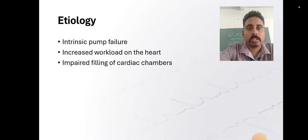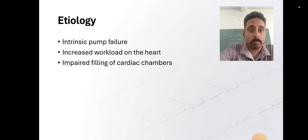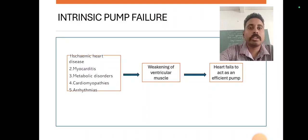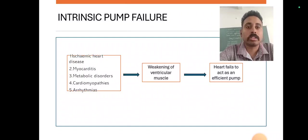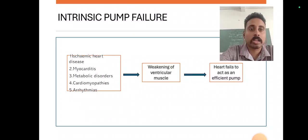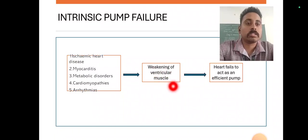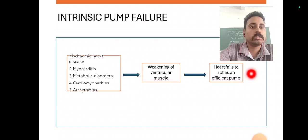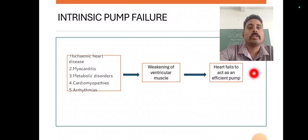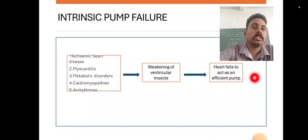Next is the etiology. The first one is intrinsic pump failure, the second is increased workload on the heart, and the third is impaired filling of the cardiac chamber. Intrinsic pump failure can occur through different diseases: ischemic heart disease, myocarditis, metabolic disorders, cardiomyopathy, and arrhythmias. These diseases cause weakening of the ventricular muscle, and when the heart fails to act as an efficient pump, it leads to heart failure.